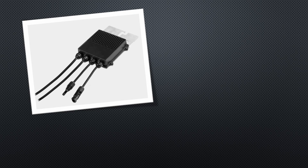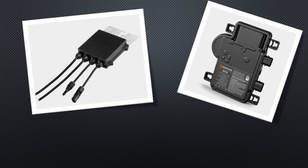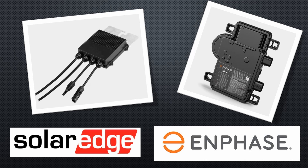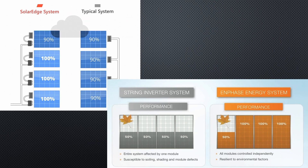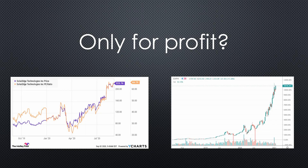Do I need optimizers or microinverters for my PV system? SolarEdge and Enphase, the two most prominent companies in this field, say yes and sell many of these little devices. They also explain why they are absolutely needed. But is this true? Or are these optimizers only needed to fill the pockets of the manufacturers? Let's do some tests and also learn something about modern solar panels.